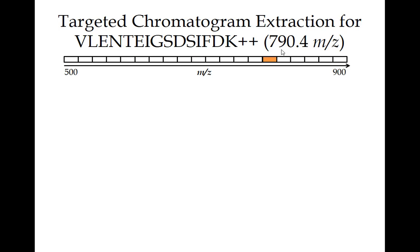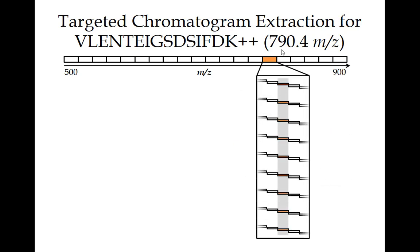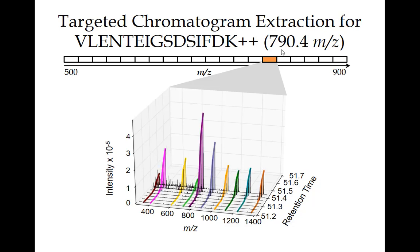The first step is to determine which isolation window it falls in — we make an assumption about charge state, and you can query multiple charge states. In this example, we look at the doubly-charged precursor for this peptide, which has an m/z of 790.4, placing it in the 780 to 800 m/z window. The key thing is we've sampled this window multiple times, so now I can show you the stack of actual MS/MS spectra that contain that peptide.